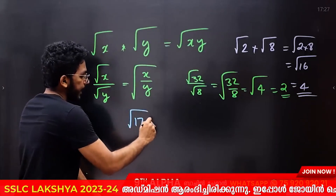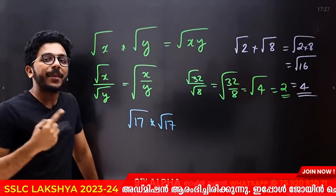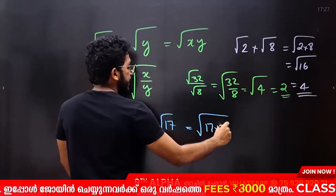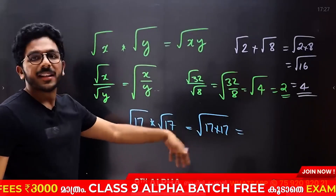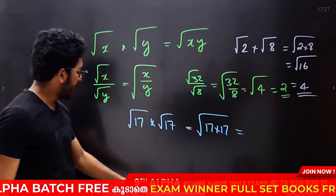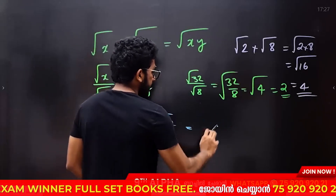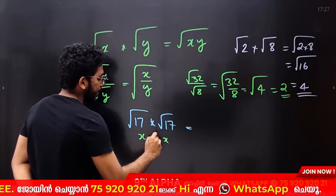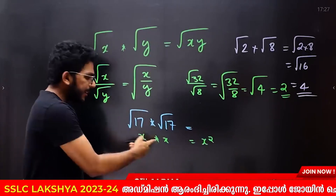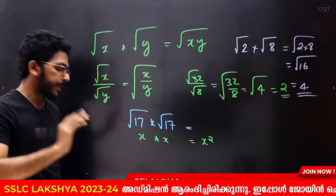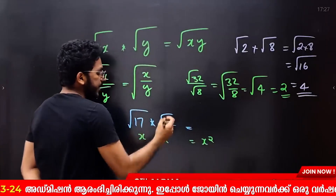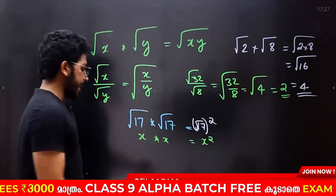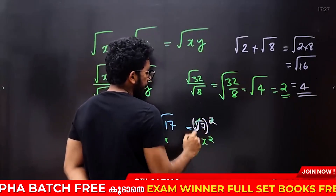Now let's take a look: root 17. If you multiply root 17 into root 17, the answer is 180 — wait, let me clarify. Root 17 into root 17 is root 17 squared. The square root and the square are opposites.